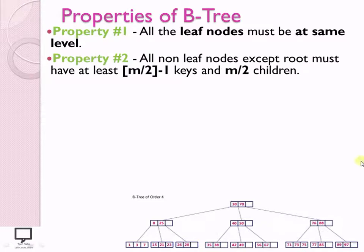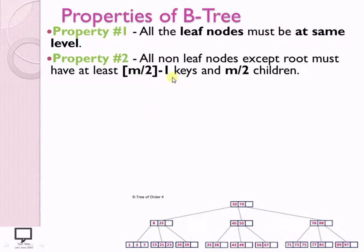Property 2 deals with non-leaf nodes which are not a root. All non-leaf nodes must have at least M/2 minus 1 keys and M/2 children — this property deals with the minimum count, where M is the order of the tree. For our order-4 example: 4/2 = 2, and 2 minus 1 = 1, so at least 1 key must be in every node and at least 2 children must be present.